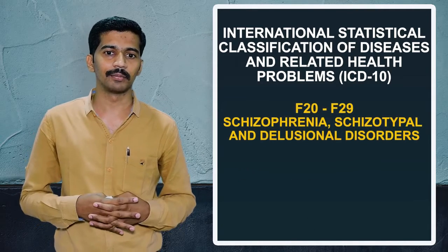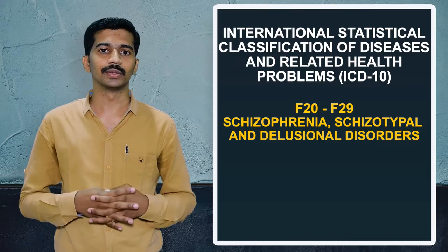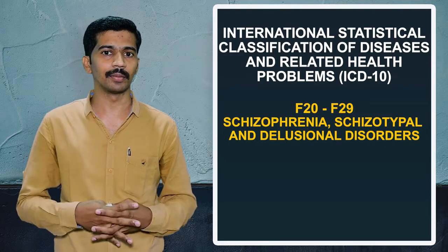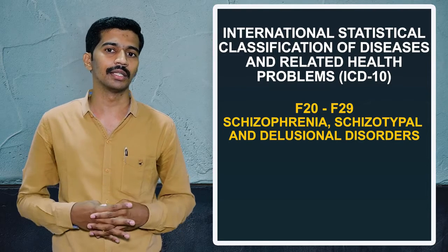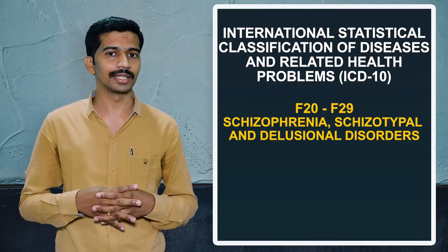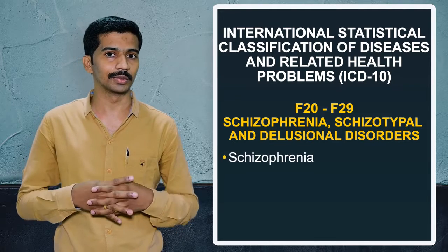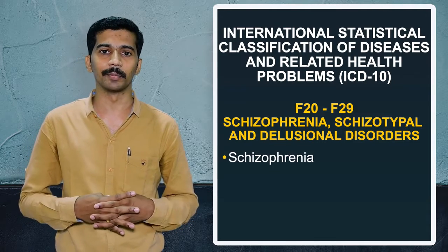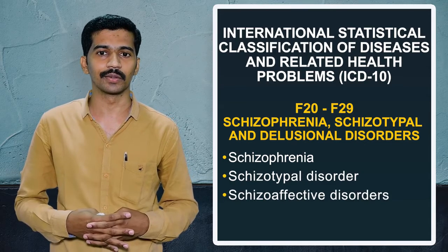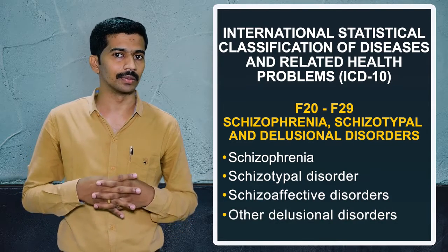The next chapter, F20 to F29, includes schizophrenia, schizotypal, and other delusional disorders. In this chapter we can see details regarding different types of schizophrenia, schizotypal disorder, schizoaffective disorder, and other types of delusional disorder.